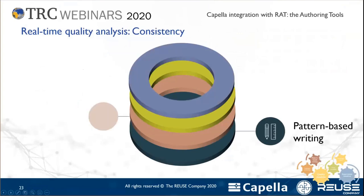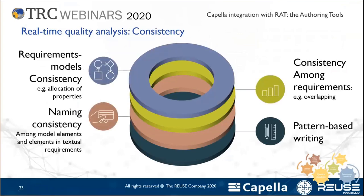Concerning consistency, we have identified four sub-dimensions: consistency in the structure you follow for your requirements — pattern-based writing; consistency in how you name different entities, both in your requirements and in your models, based on dictionaries and models; consistency among requirements themselves — overlapping or contradictory requirements; and consistency between requirements and models. All four sub-dimensions of consistency have been considered in the RAT tool.